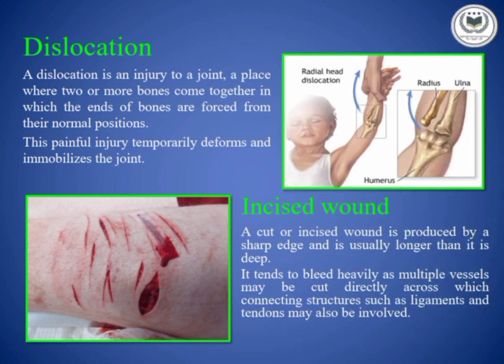Dislocation, also called joint dislocation, is an injury where a joint is forced out from its normal position — as in car accidents or sports, etc. Dislocation is most commonly occurred and is most common in shoulder joints, fingers, and knee.